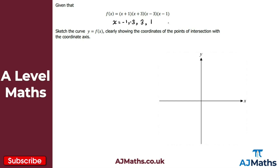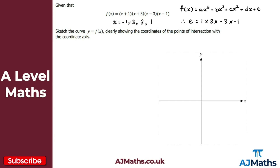We also need the y-intercept. If we expanded these four factors we'd get something of the form ax⁴ + bx³ + cx² + dx + e. The e term at the end is our y-intercept, because when x equals zero all other terms vanish. We don't need to expand fully — we can evaluate e by simply multiplying 1 × 3 × (−3) × (−1), which gives 3 × (−3) = −9, then × (−1) = positive 9. So we have our y-intercept.